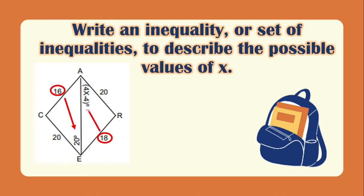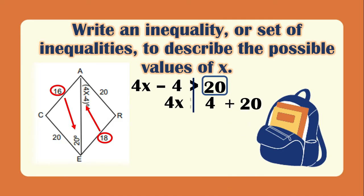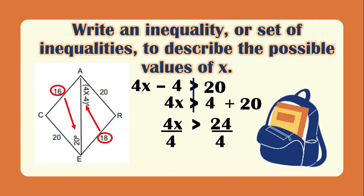We observe that the two sides with different measurements are CA which is 16 and RE which is 18. The opposite angle of CA is angle E which is 20 degrees, while the opposite of RE is 4x minus 4. Since 18 is greater than 16, we have 4x minus 4 greater than 20. Transposing: 4x is greater than 24. Dividing both sides by 4, x is greater than 6.